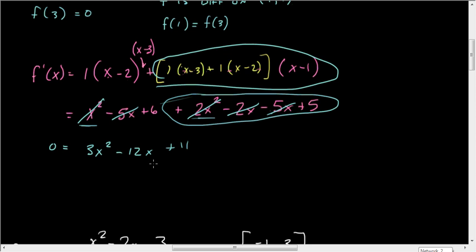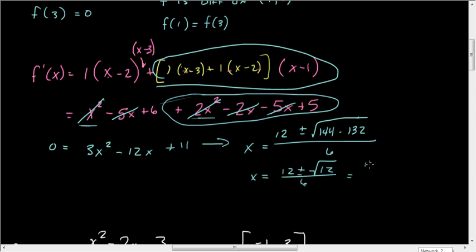Using the quadratic formula: x = (12 ± √(144 - 132))/6. That's 12 ± √12 over 6, which is 12 ± 2√3 over 6. Which means this is 6 ± √3 over 3.